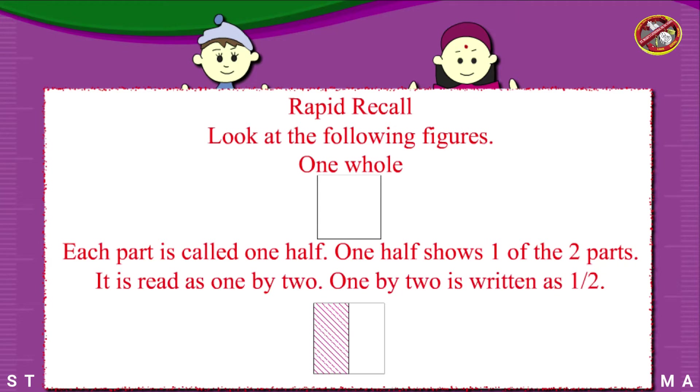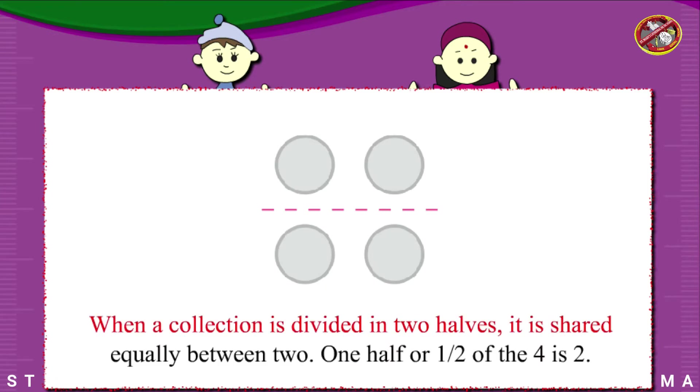It is read as one by two. One by two is written as 1/2. When a collection is divided into halves, it is shared equally between two. One half of four is two.